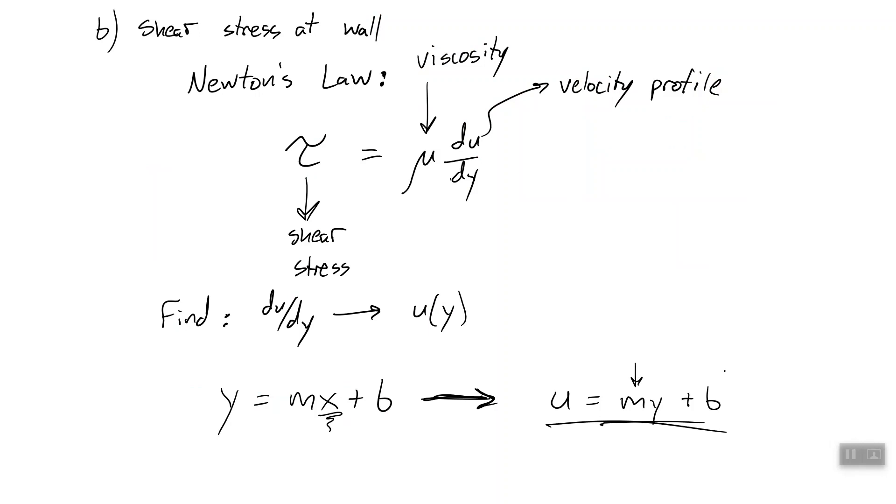So this is the equation of a line. However, we don't know what m and b are. We're going to have to find those. So let's find m and b. We'll do that by using known values.